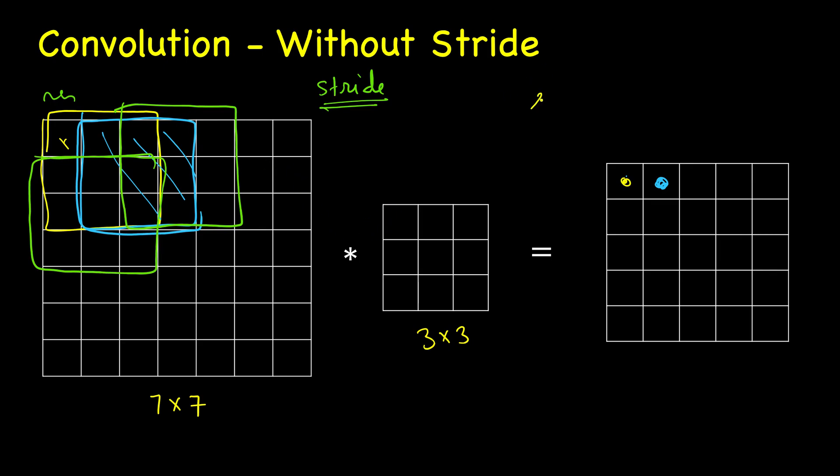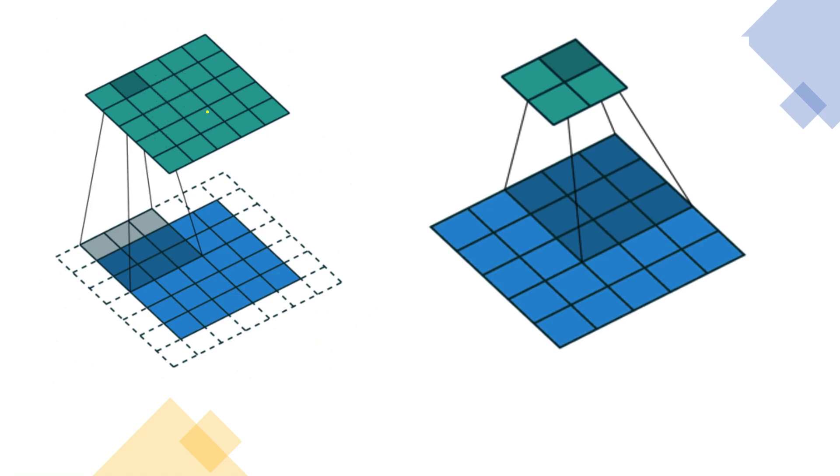So what we typically do is that instead of shifting by one we shift by more units. So s might be equal to 2, where s denotes the stride. S may be 2, 3, and so on.